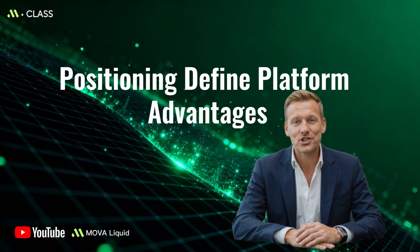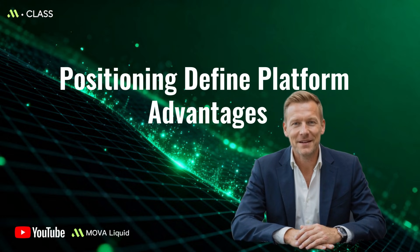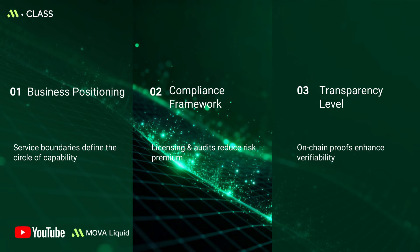For business positioning: Binance focuses on global depth and product breadth. Coinbase emphasizes institutional access, custody, and compliance services. MovaLiquid focuses on a fully on-chain order book and verifiable settlement.